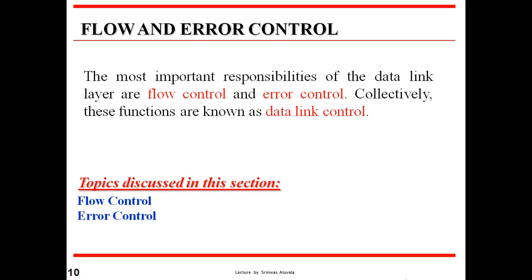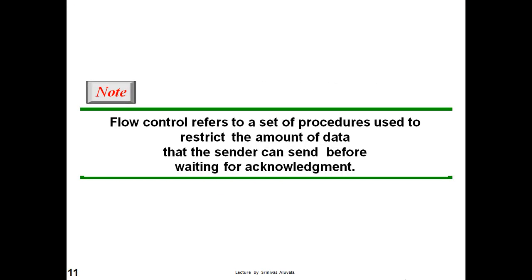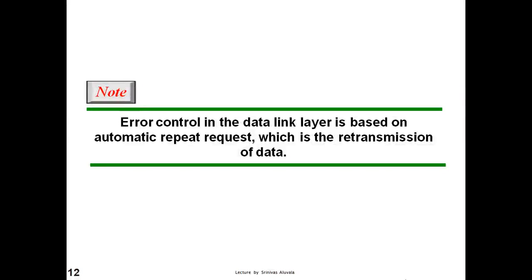Flow and error control. The most important responsibilities of the data link layer are flow and error control. Collectively, these functions are known as data link controls. Flow control refers to the set of procedures used to restrict the amount of data the sender can send before waiting for an acknowledgement. Error control in the data link layer is based on automatic repeat request, which is the retransmission of data.